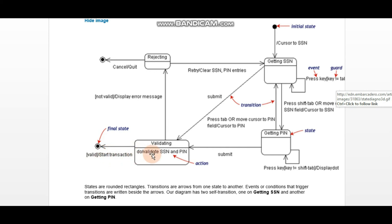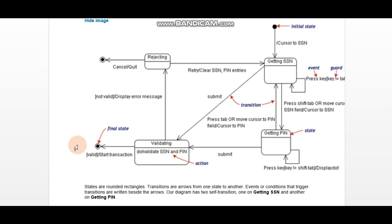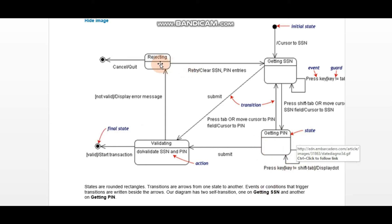If it is invalid, it will reject and then cancel. Cancel or quit will go to the final state. There are two final states — either quit or after validation. There are also actions and outside states. You can see a self-transition here: when it comes back to retry or clear SSN and PIN entries, it goes back to the social security number and PIN states.